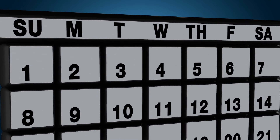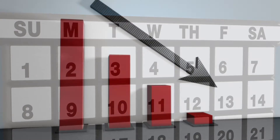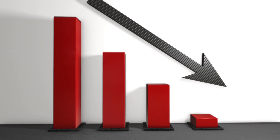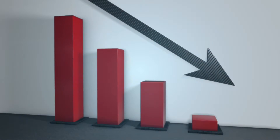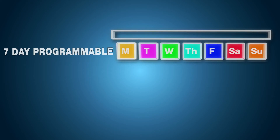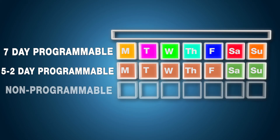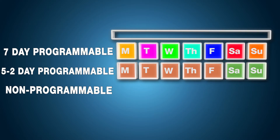A program schedule is a great way to save money on your utility bills by running your heating or cooling equipment only when needed. It's important to note your installer may have set up your thermostat for 7-day programming, 5-2-day programming, or as a non-programmable thermostat. If non-programmable was selected, you cannot program the thermostat.